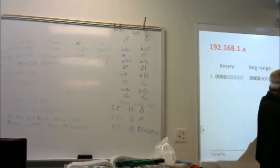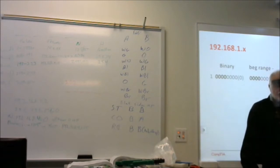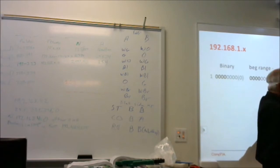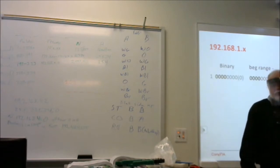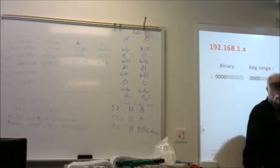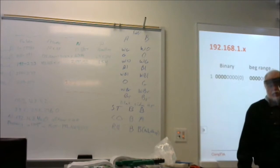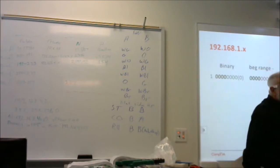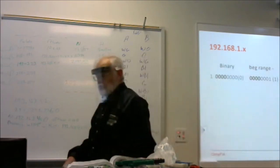Four zeros followed by 1110 — labeling our columns 1, 2, 4, 8: eight plus four is 12, plus two is 14. The broadcast address is four zeros followed by four ones, which is 15. So that's the first subnet: network 0, first host 1, last host 14, broadcast 15.